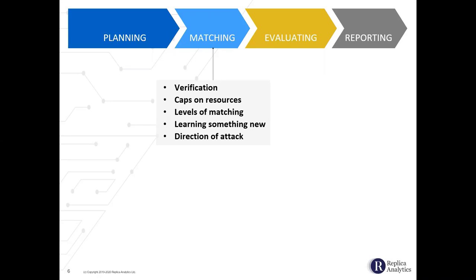Different types of attacks can be conducted: you can start with a famous person or acquaintance and search the data for a matching record, or start from the dataset itself and match against external databases such as a voter registration list. In practice, both directions of attack are used — matching against acquaintances and famous people, and matching data against registries or other databases. Both directions are intermingled throughout the process.